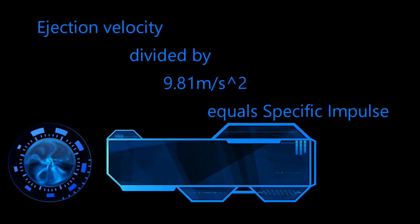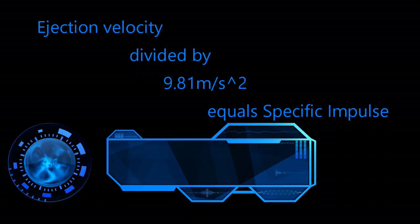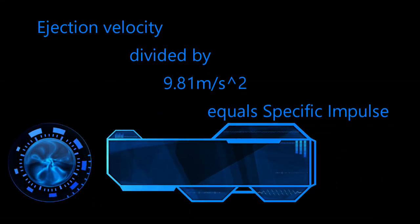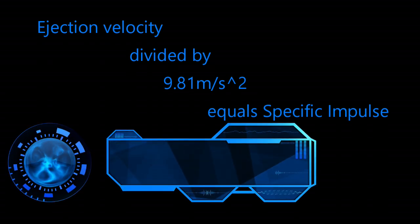Specific impulse, remember, is a measure of rocket engine efficiency. If you take the ejection velocity and divide it by normal earth gravity, which is 9.81 meters per second squared, you get the specific impulse.